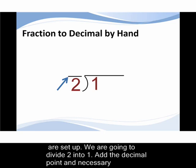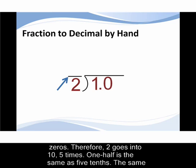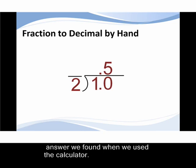We are going to divide two into one. Add the decimal point and necessary zeros. Therefore, two goes into ten five times. One half is the same as five tenths. The same answer we found when we used the calculator.